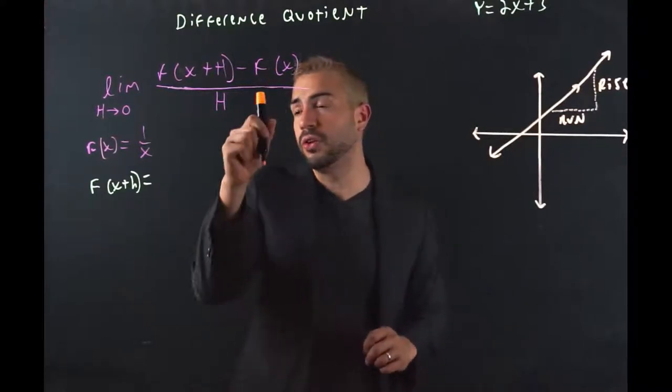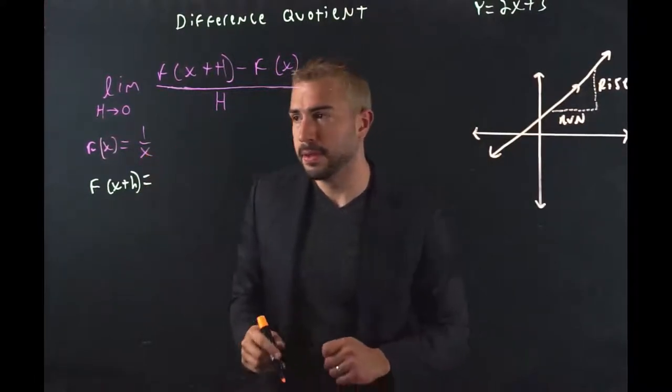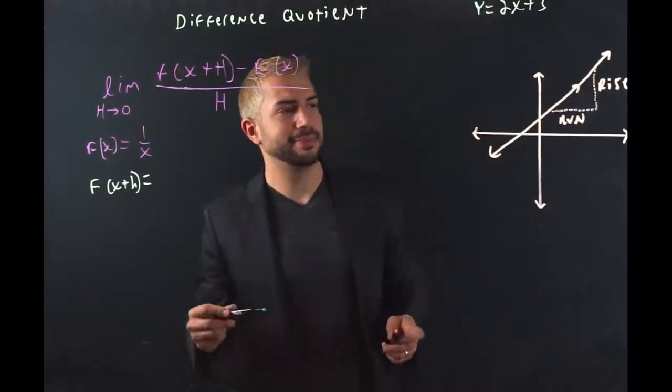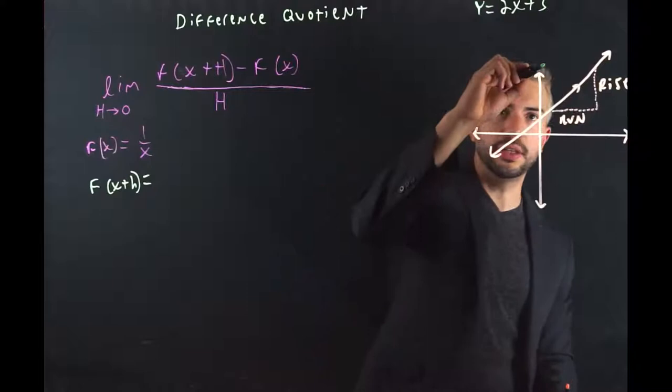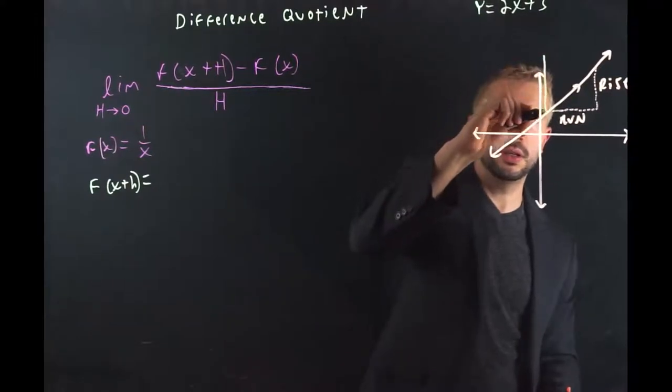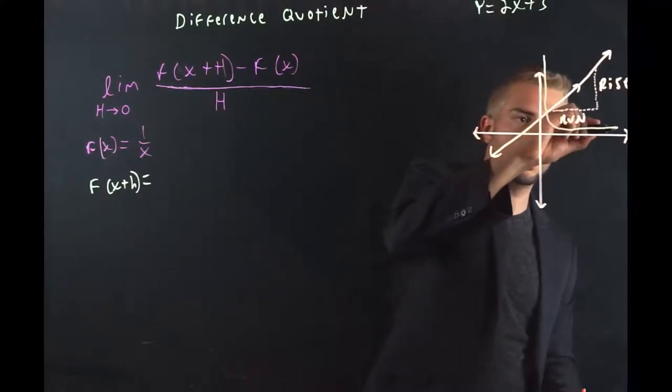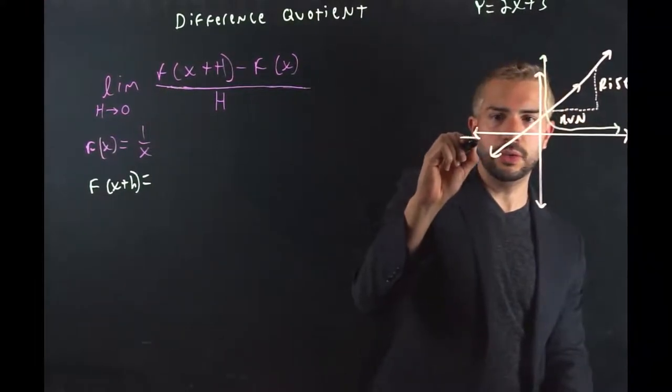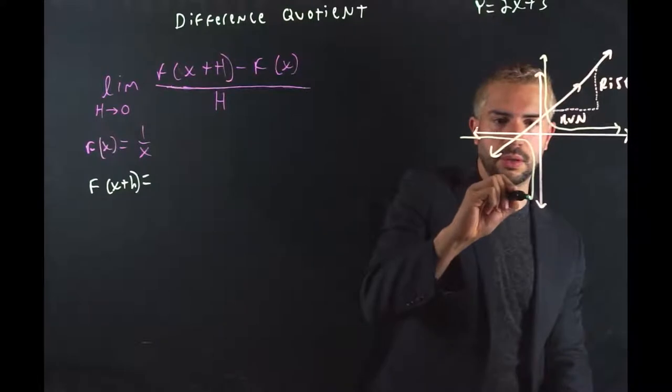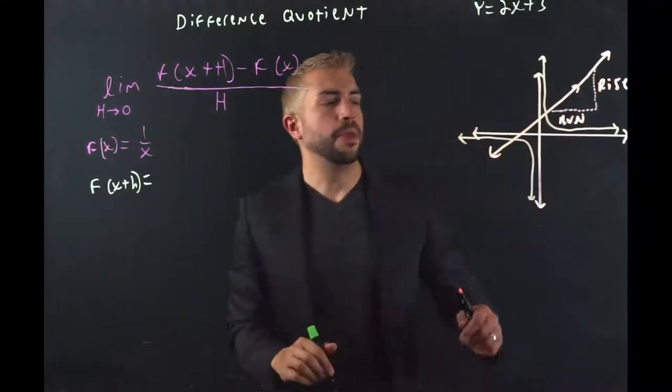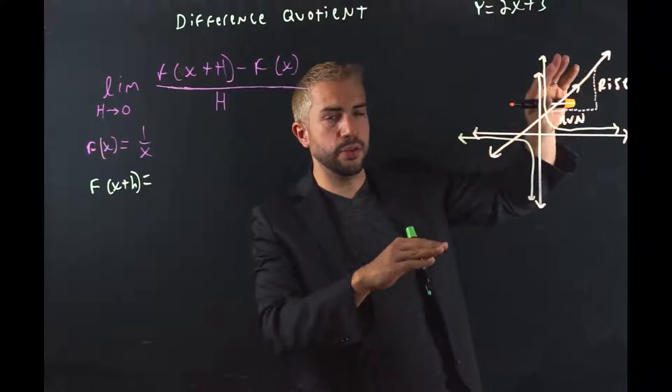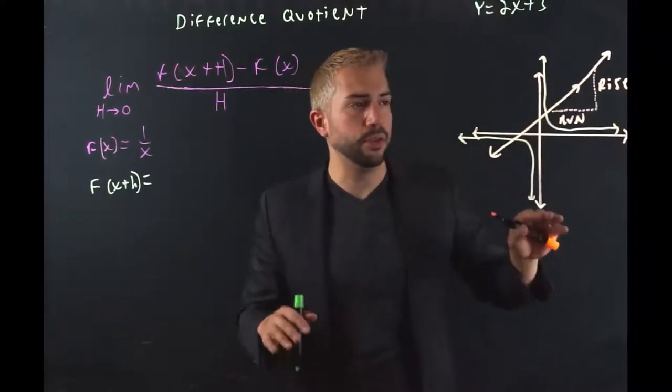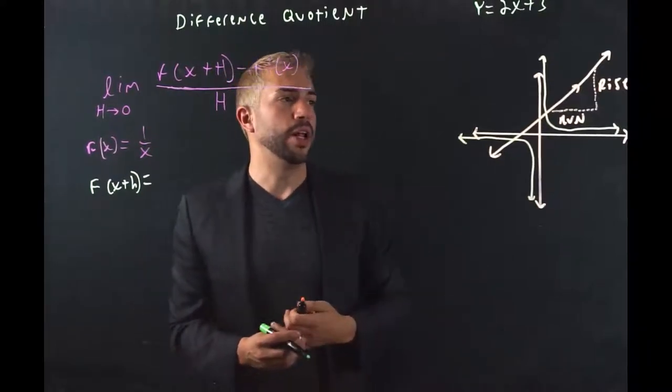Today we're going to find the difference quotient of 1 over x. And if we graph 1 over x, it's going to look something like this. That's half of it. The other half will look something like that. And we have two lines, because that depends if you're inputting a positive or you're inputting a negative. It will give you different y values.